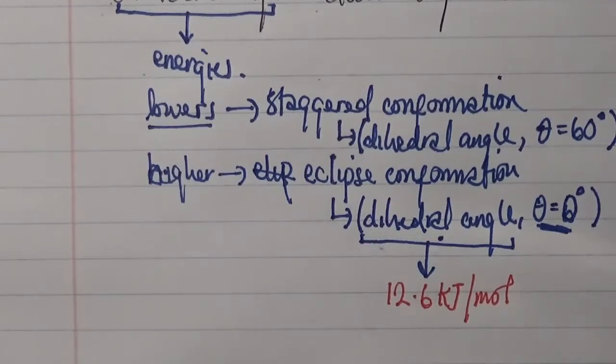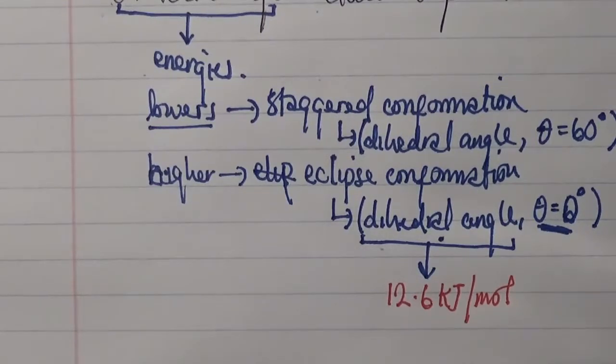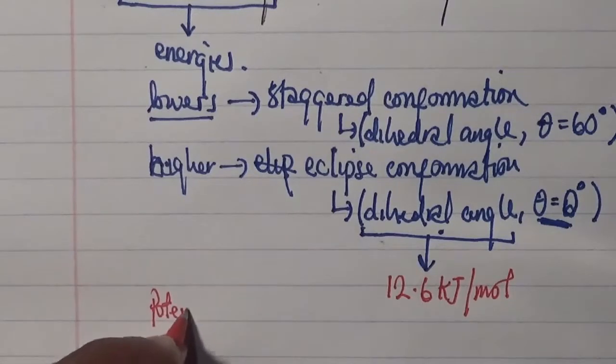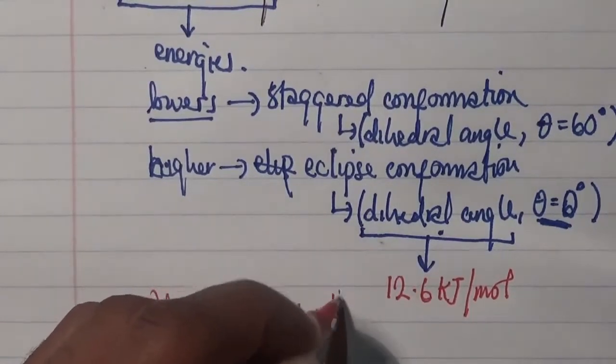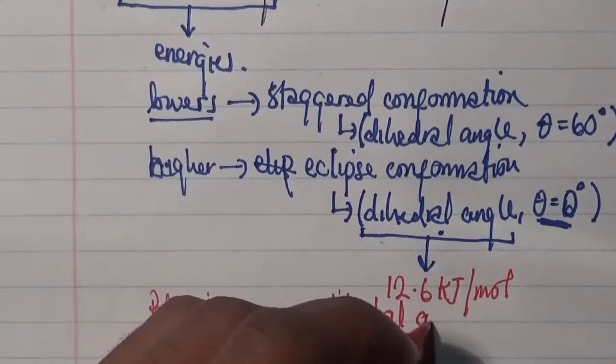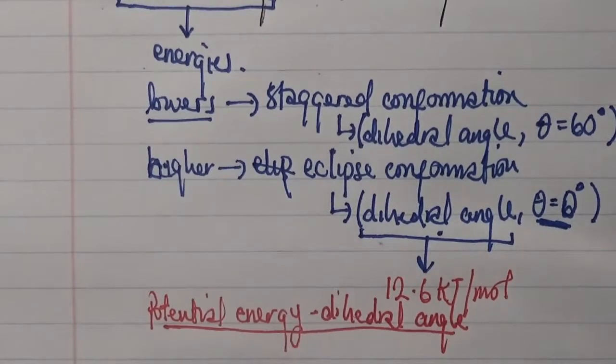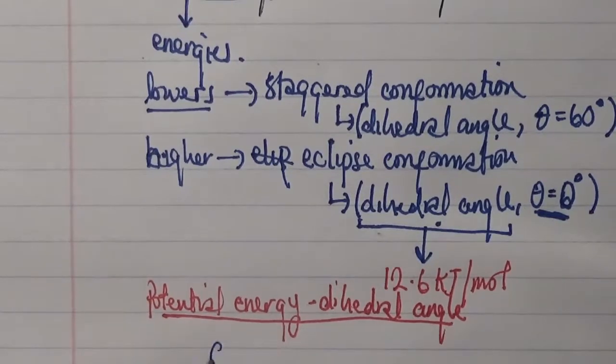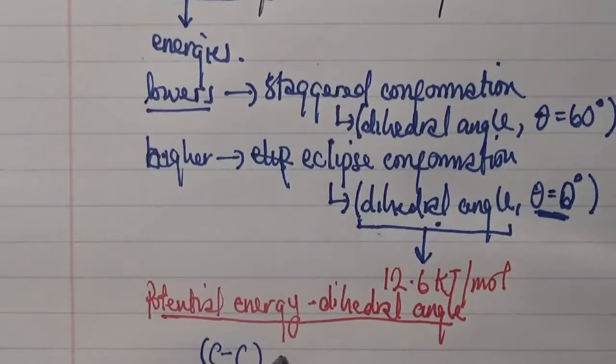And therefore, this generates that particular energy which is quite higher than the staggered conformation. Now, I'm going to draw a graphical relationship between the potential energy and the dihedral angle as we rotate every 60 degrees about the C-C bonds of ethane.